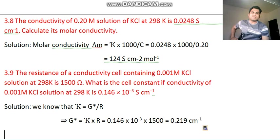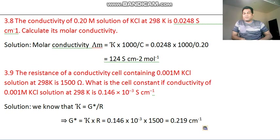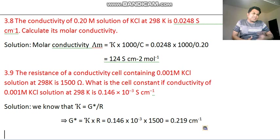Cell constant is G star. The formula for G star is: kappa equals G star divided by R. So G star equals kappa into R. Kappa is conductivity, G star is the cell constant, and R is the resistance. All values are given — make G star the subject: G star equals kappa into R, and the final answer follows directly.